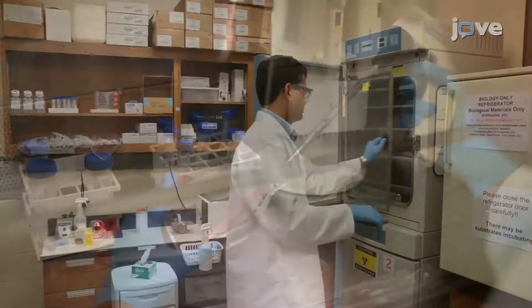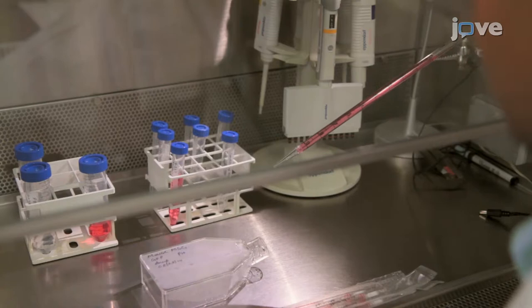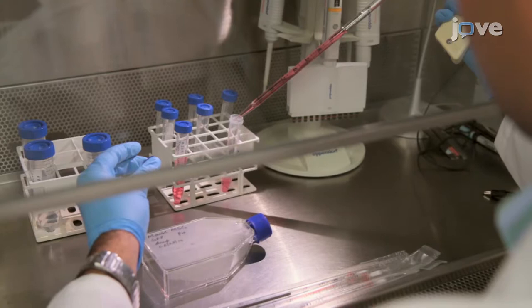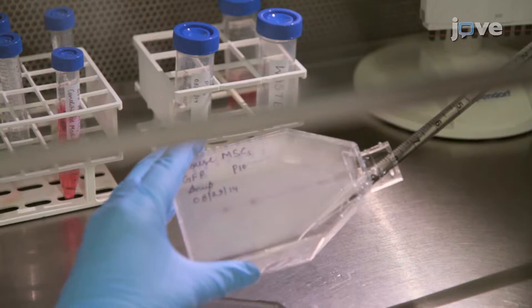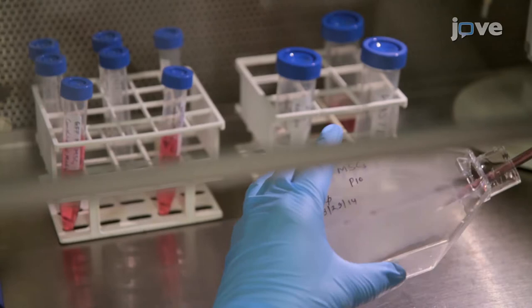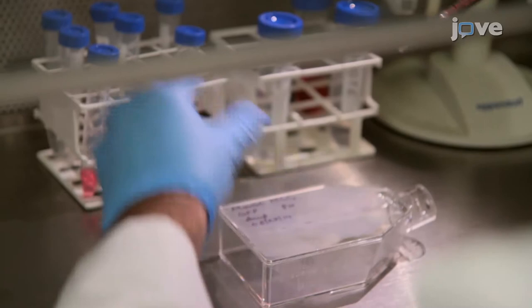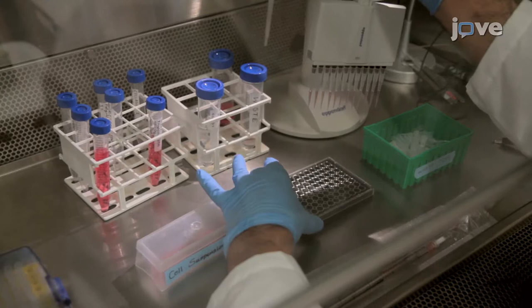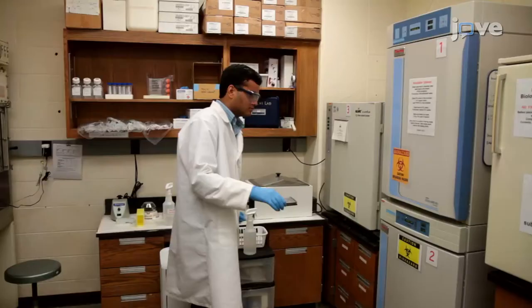In the meantime, under sterile conditions, harvest the MSCs by first collecting the growth medium, now referred to as the conditioned medium, from the flask into a 15-milliliter conical tube. Then add 8 milliliters of sterile PBS to the flask and gently swirl before aspirating the buffer. To detach the cells from the flask, add 1 milliliter of 0.05% trypsin and 0.01% EDTA solution. When the cells have detached, add 8 milliliters of the conditioned medium before collecting the cell suspension and replating the cells at about 300 cells per well according to the text protocol.